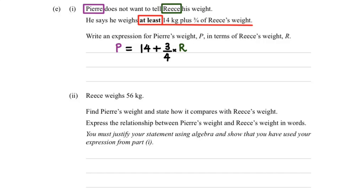Now, remember that red box right there, how it says at least, and at least is in bold. So if it's at least, then this is the symbol we need to write it with. So it's greater than or equal to 14 plus 3 quarters times Rhys' weight.